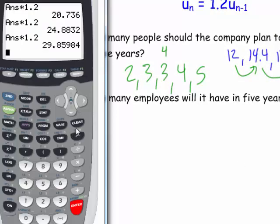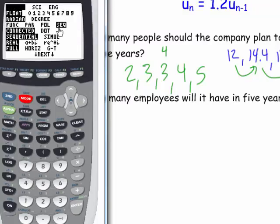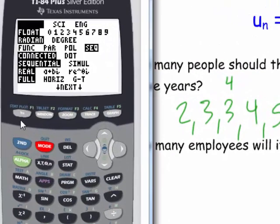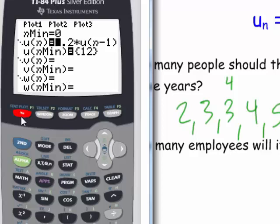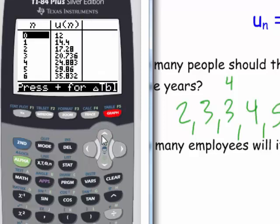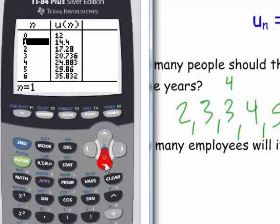Or remember we could have used our sequential mode like we talked about. We're going to mode, change it to SEQ to get into sequential mode. Then we want to get our equation editor. I already have mine typed in. This is important up top: we're starting at the zeroth term, because no years have gone by. Your initial amount is 12 employees, and then 1.2 times U, n minus 1. I'm going to go to my table. There we go. When one year went by, 14.4.